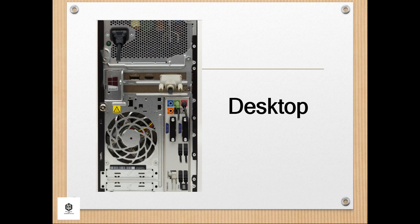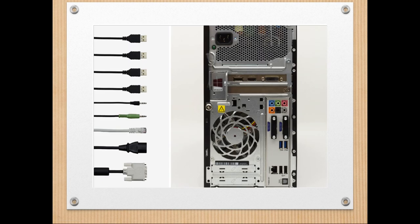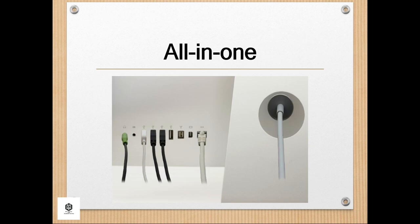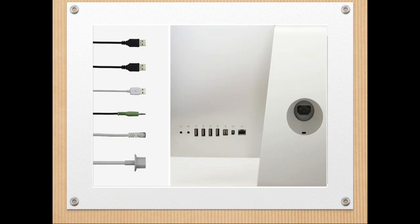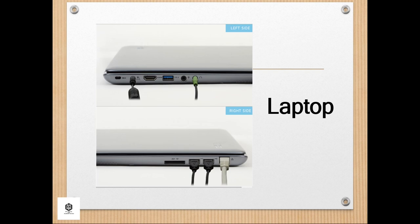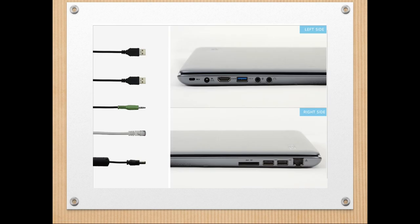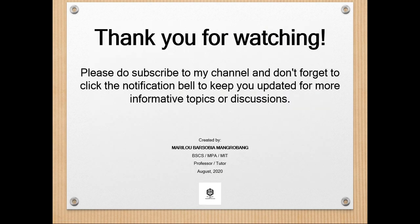Here are examples of a desktop computer case or system unit, followed by an example of an all-in-one computer, and finally examples of laptop ports on both the left and right sides. That covers everything regarding the types and parts of the system unit or computer case. Thank you for watching — have a nice day.